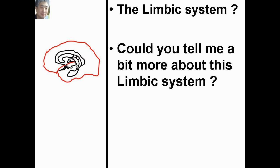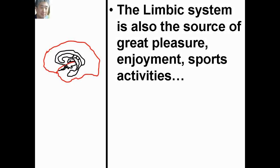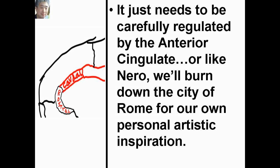The limbic system is the system in our brain that deals with all our primitive emotions — raw anger, primeval fury, sexual impulse, aggression, and phobias. The limbic system is also the source of great pleasure, enjoyment, sports, and activities. It just needs to be carefully regulated by the anterior cingulate, or it will, like a needle, burn down the city of love for our own personal artistic inspirations.